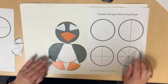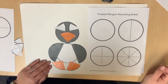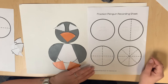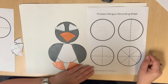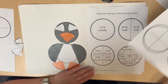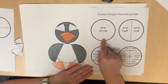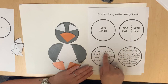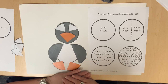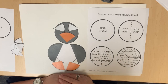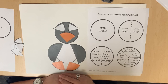Using the fraction penguin recording sheet, we will ask students how did we use whole circles and fractional parts to create our fraction penguins? We cut whole circles into different numbers of parts. Model how to label the whole circle and the fractional parts of each partitioned circle. Have students observe the whole circle partitioned into halves and the whole circle partitioned into fourths. What do you notice about the number of halves compared to the number of fourths? There are fewer halves and more fourths. What do you notice about the size of the halves compared to the size of the fourths? The halves are larger in size and the fourths are smaller in size.